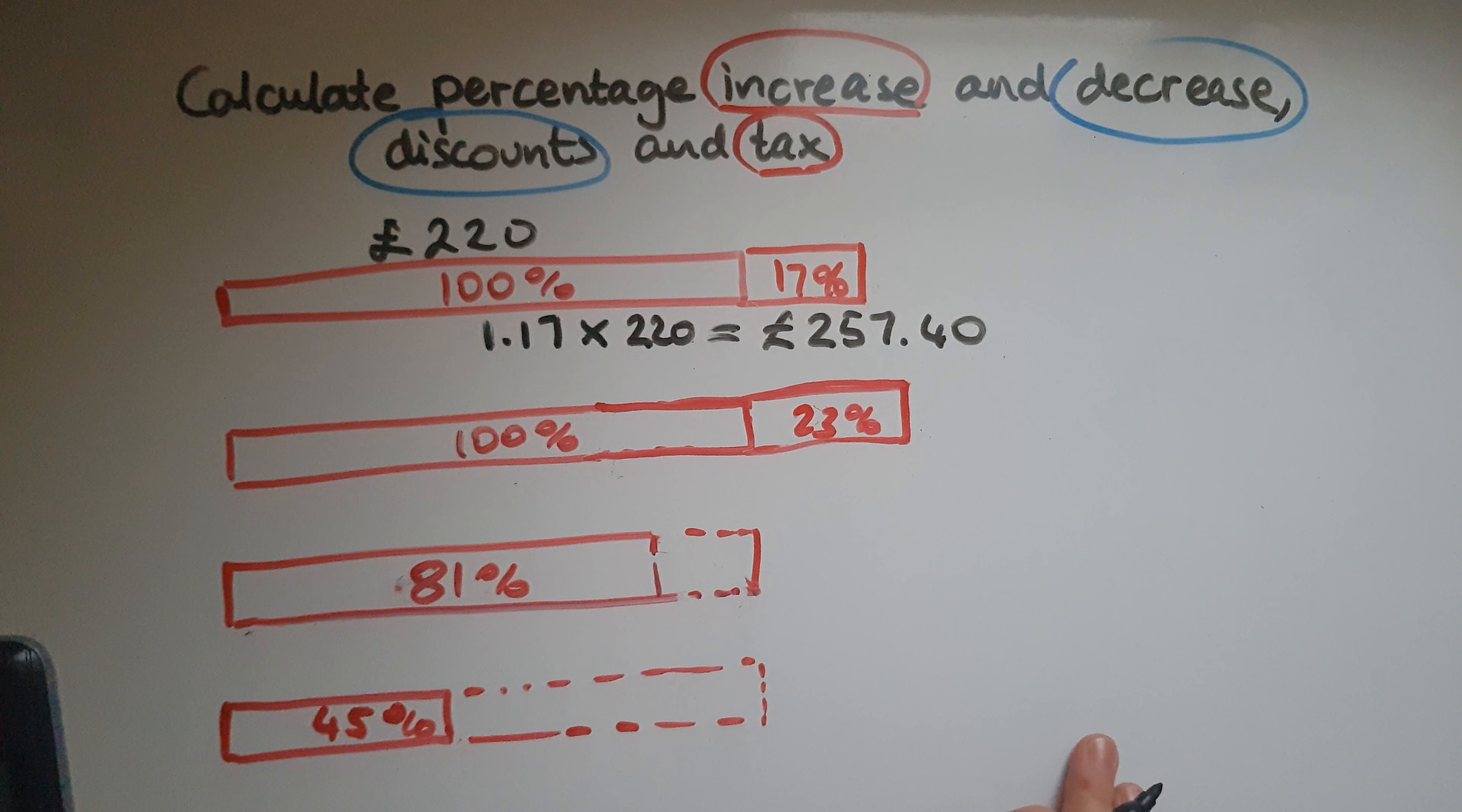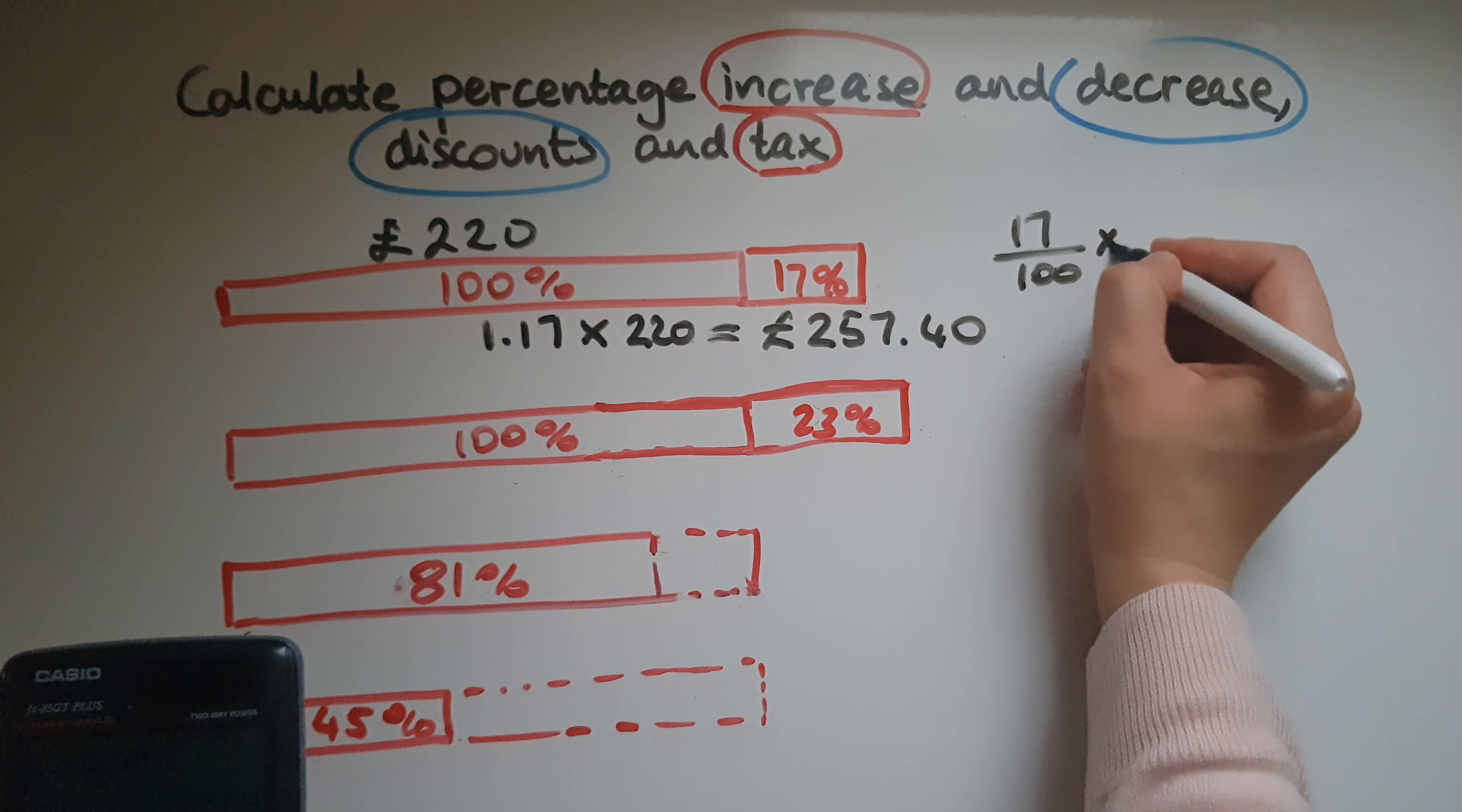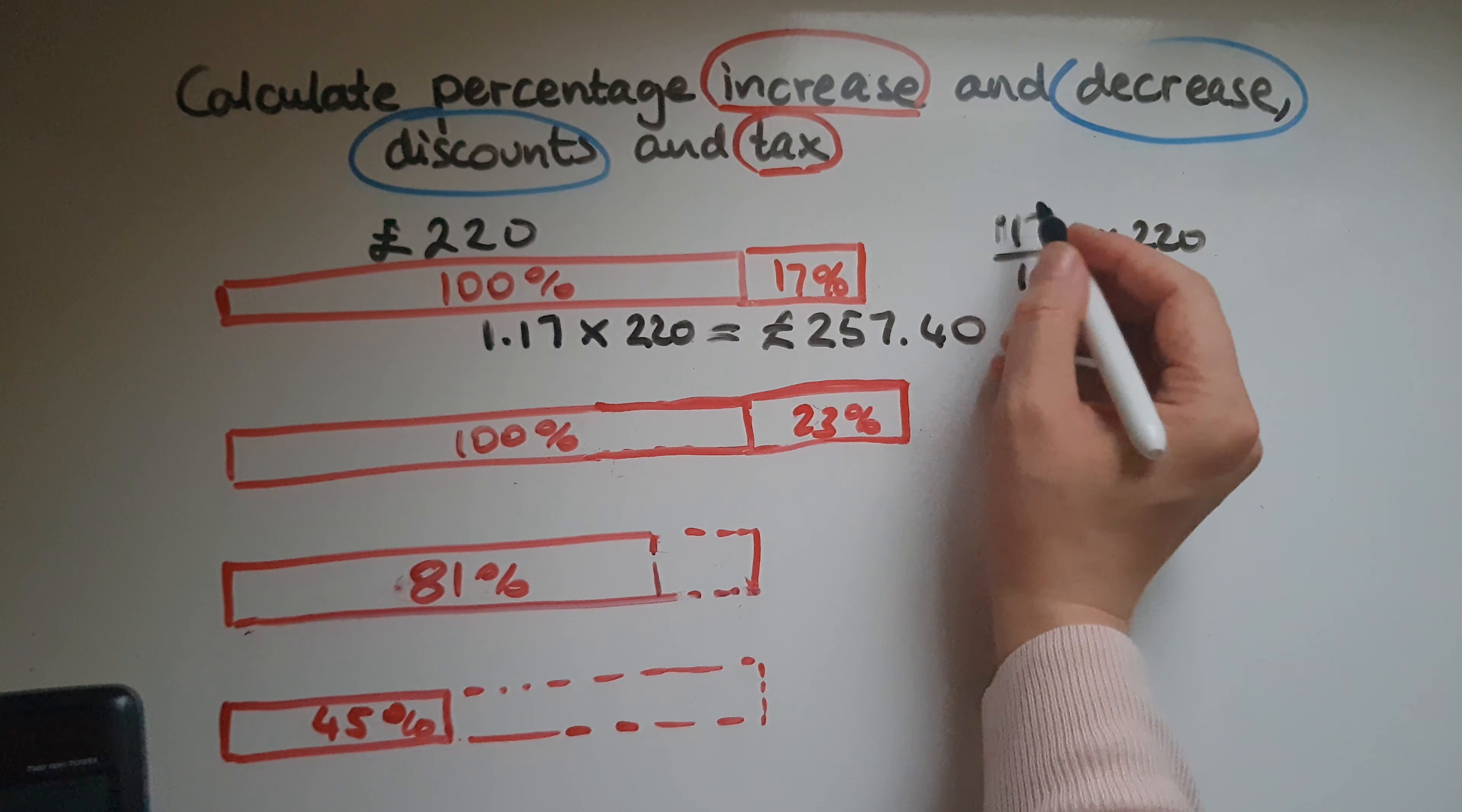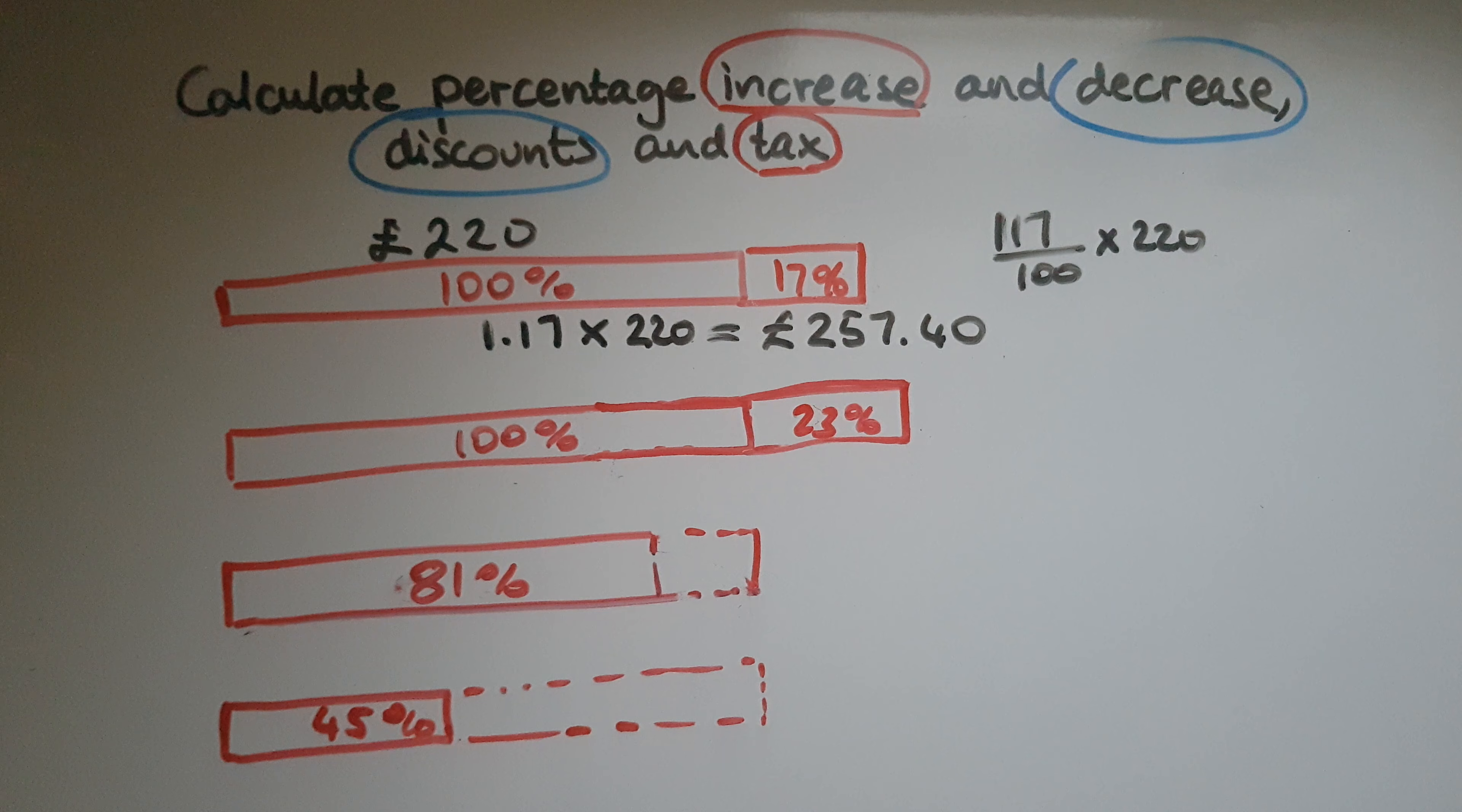But there are different ways you could have worked this out, such as doing 17% first. So 17 divided by 100 times 220, which is the original amount, and that gives us just the 17%. Or if you want to do it all together, 117% divided by 100, which gives us 1.17 times 220. So these are just some of the ways, and you can use any method that you like.